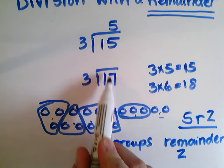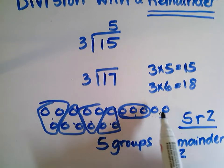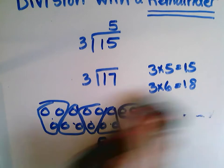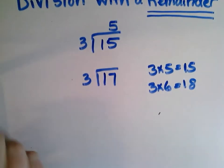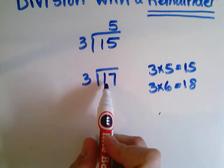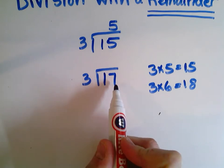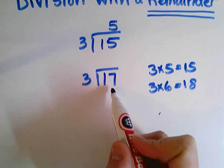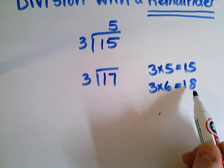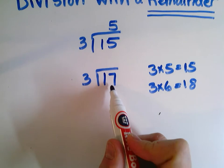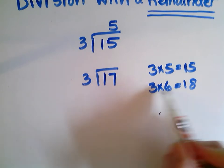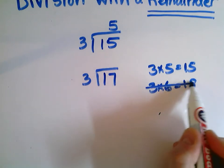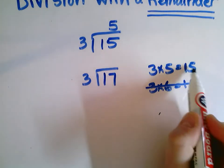Let me show you how we're going to do that with the long division symbol, instead of drawing out a picture every time. So remember we got 5 remainder 2. With this problem, 17 divided by 3, I know 3 times 5 is 15 — that gets me pretty close to 17. 3 times 6 is 18, but I only have 17 things, so I can't use 3 times 6.